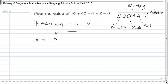40 divided by 4 is 10, times 2 minus 8. 16 plus 10 times 2 is 20, minus 8. 16 plus 20 equals 36. And 36 minus 8 equals 28.